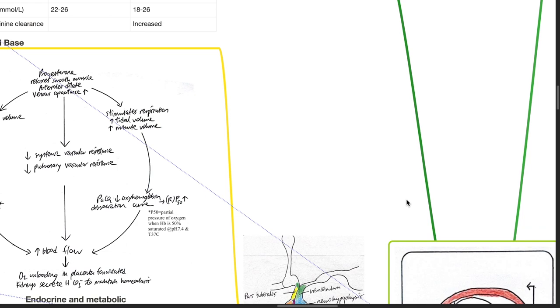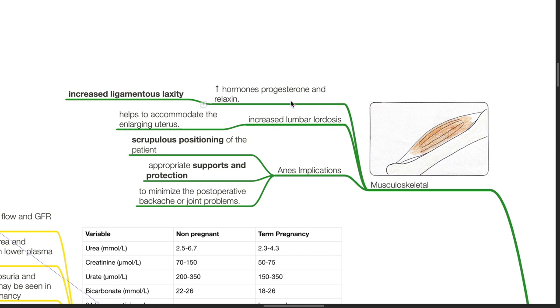Musculoskeletal system: Increases in progesterone and relaxin result in increased ligamentous laxity. Increased lumbar lordosis helps accommodate the enlarging uterus. Anesthetic implications include scrupulous positioning of the patient with appropriate supports and protection to minimize postoperative backache or joint problems.